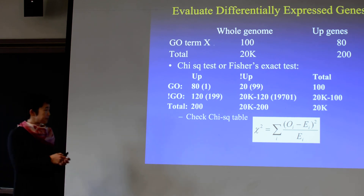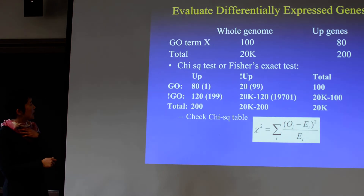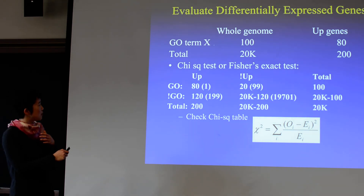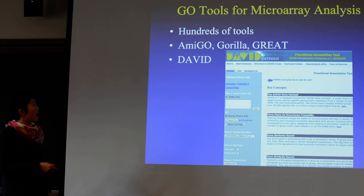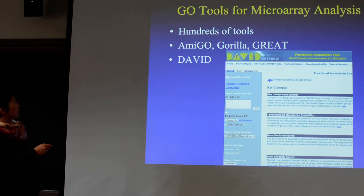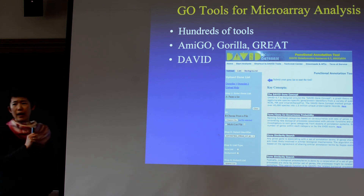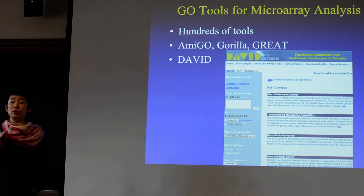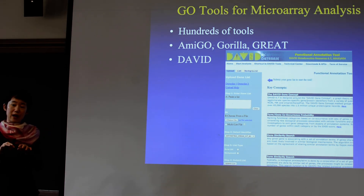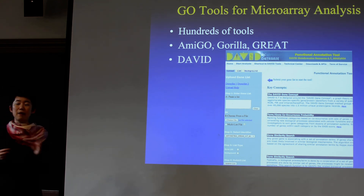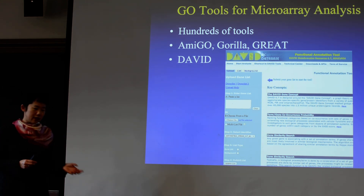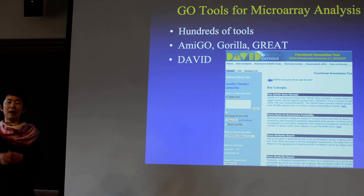There are tools available to do this — actually there are around 200 tools available. The ones we use quite a bit include AmiGO, GREAT, and DAVID. There are also gene ontology tools on Bioconductor you can run on the command line, and some are online tools. They vary by the specific statistical test used, but roughly it's the same idea, and it just comes down to whether the user interface is friendly or not.